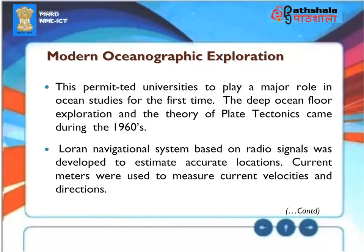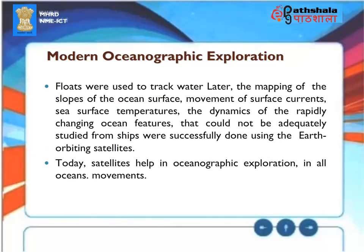Current meters were used to measure current velocities and directions, and floats were used to track water movements. Later, the mapping of ocean surface slopes, surface currents, sea surface temperatures, and rapidly changing ocean features were successfully accomplished using Earth-orbiting satellites. Today, satellites help in oceanographic explorations in all oceans.